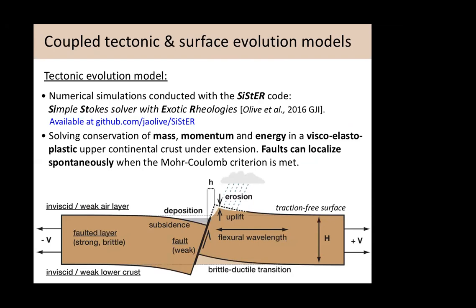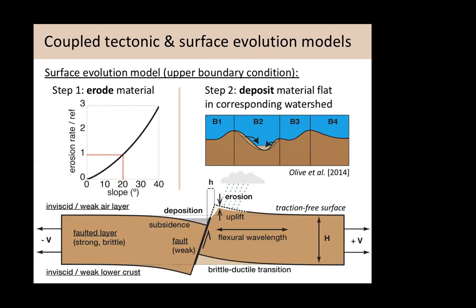The question was: does the initial fault stay stable, keep growing, or do we break a new fault? We coupled this with simple topographic evolution rules: erode material at a rate that scales non-linearly with local slope, then take all the eroded mass and deposit it flat in the corresponding watershed — local mass conservation. Whenever you create a footwall high, you take away a chunk of mass and deposit it in the basin. The one parameter you can tune is the overall efficiency of surface processes through the reference erosion rate.